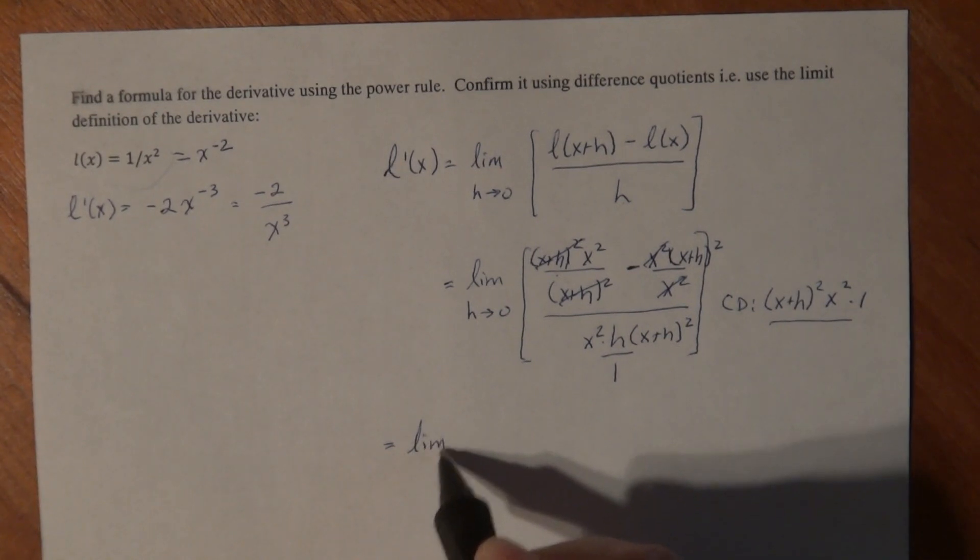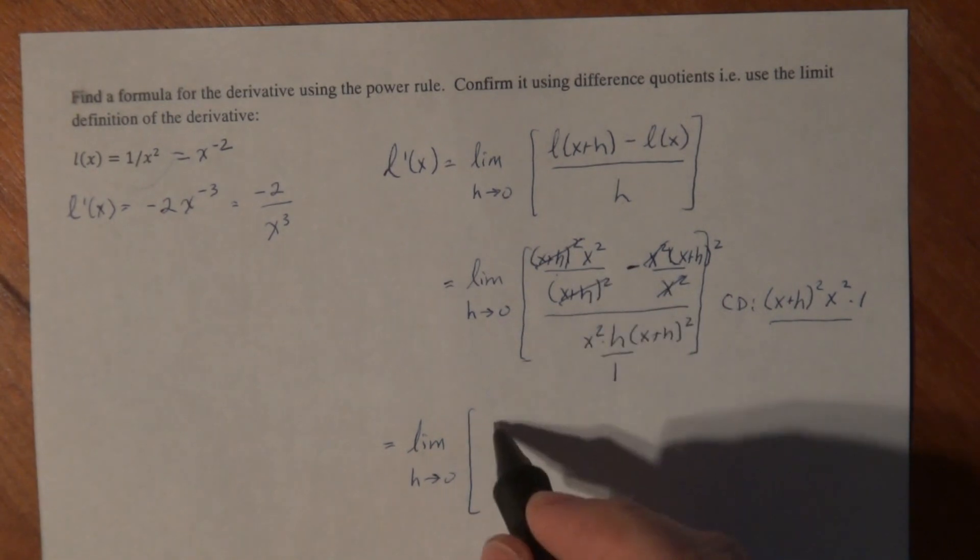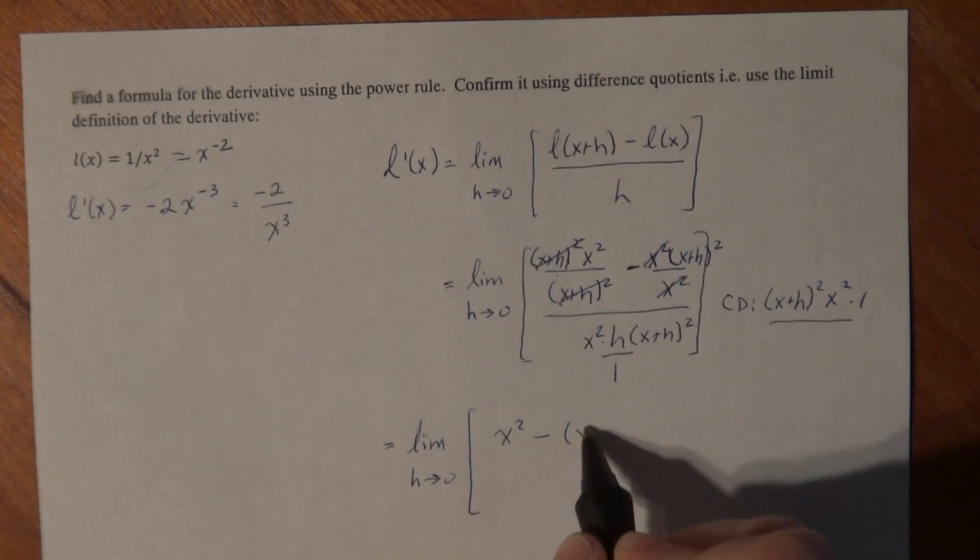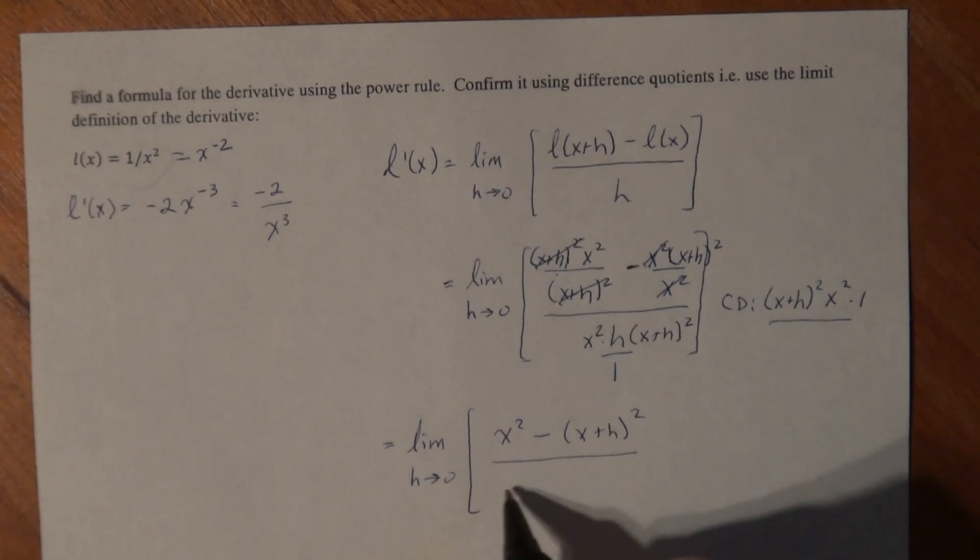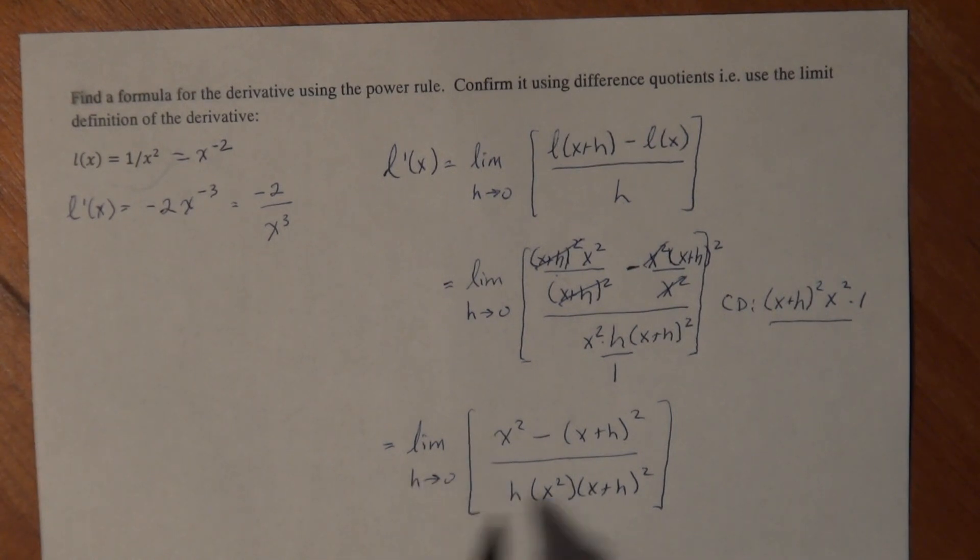I have the limit as h goes to 0. Here this simplifies to x squared. This simplifies to x plus h squared. And the denominator simplifies to h times x squared times x plus h squared. Notice now, I do not have a complex fraction any longer. But again, when I try to take the limit, I plug in 0 for h, and I still get something undefined here. So let's do some more algebra to rectify that situation.